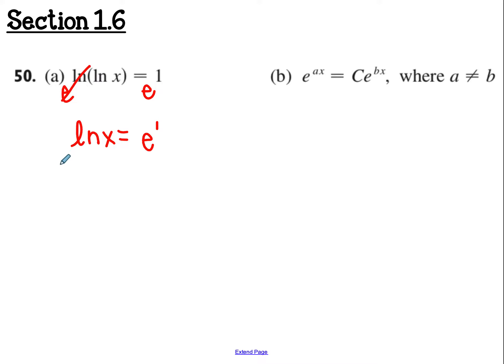Then I need to get rid of ln again. So I do base e. So x equals e to the e to the first, or you can just write e to the e. That would be our answer for part a. This is our exact answer. You could also type it in.